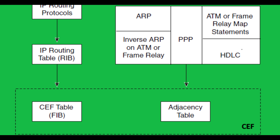CEF leverages the RIB as its initial source of routing information. The RIB, which contains all routing entries learned from various routing protocols and configured static routes, provides the foundation for CEF. CEF creates the Forwarding Information Base, FIB, based on the information stored in the RIB. It filters out the best and most relevant routes from the RIB, discarding redundant and less optimal paths.